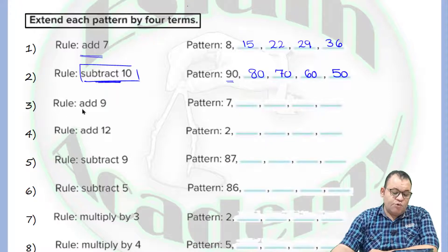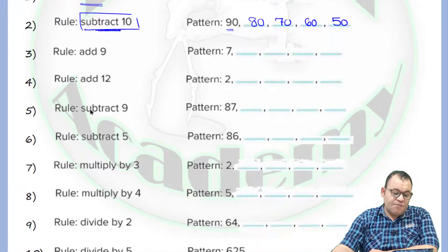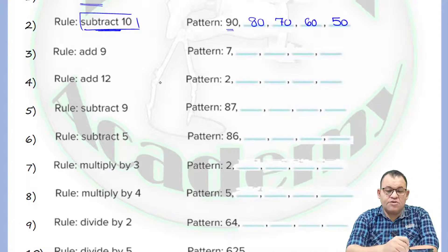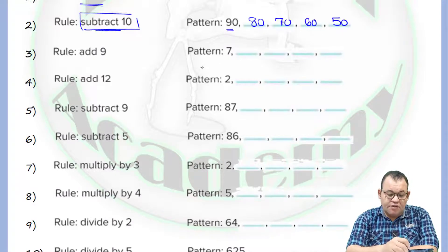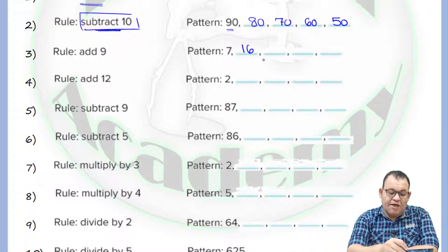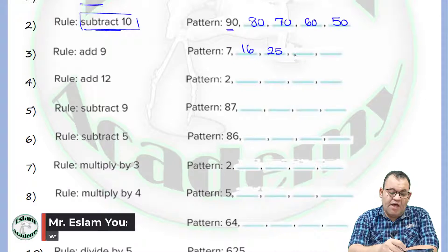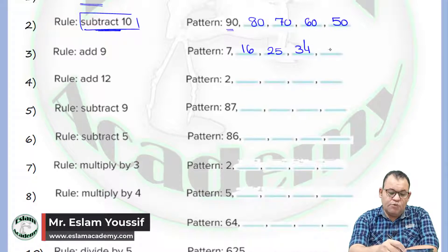Now in number 3 we need to add 9. We just add 9 to the first term that we have, which is 7. If you add 9 it will be equal to 60. By adding 9 it will be equal to 25. Adding one more 9 it will be equal to 34. Adding 9 it will be equal to 43.